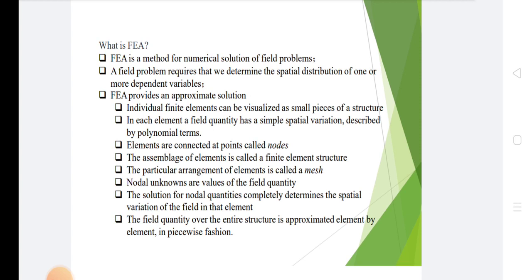In each element, a field quantity has simple variation described by polynomial terms. Elements are connected at points called nodes. The assembly of elements is called a finite element structure. The particular arrangement of elements is called a mesh.